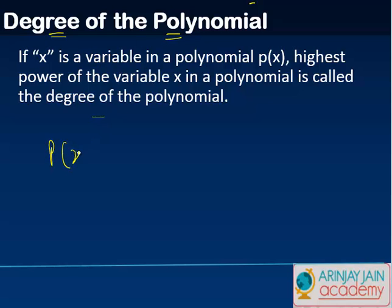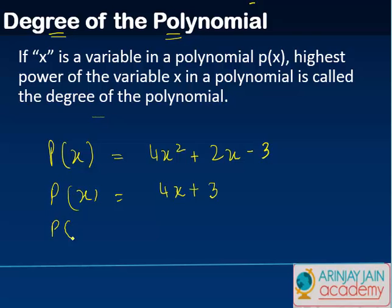Let's say for example you have a polynomial p(x) = 4x² + 2x - 3. And you have another polynomial which is like 4x + 3. And then you have a third polynomial which is like 3x³ + 2x² + x - 3.